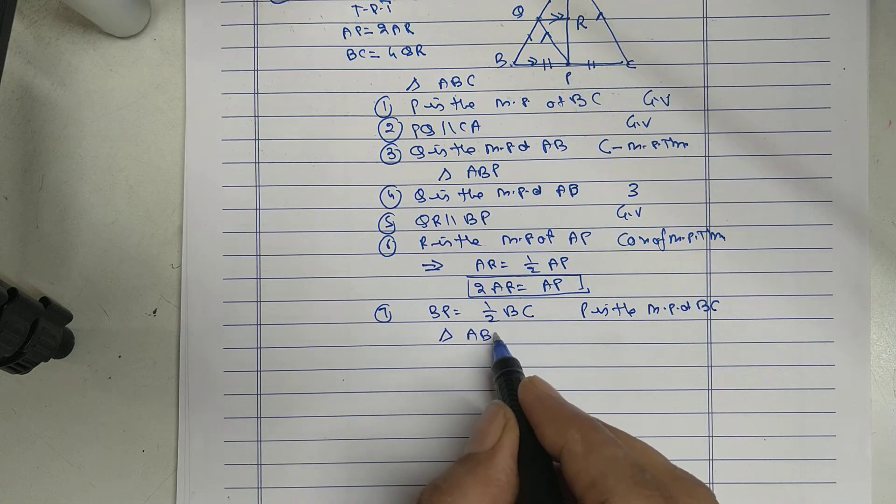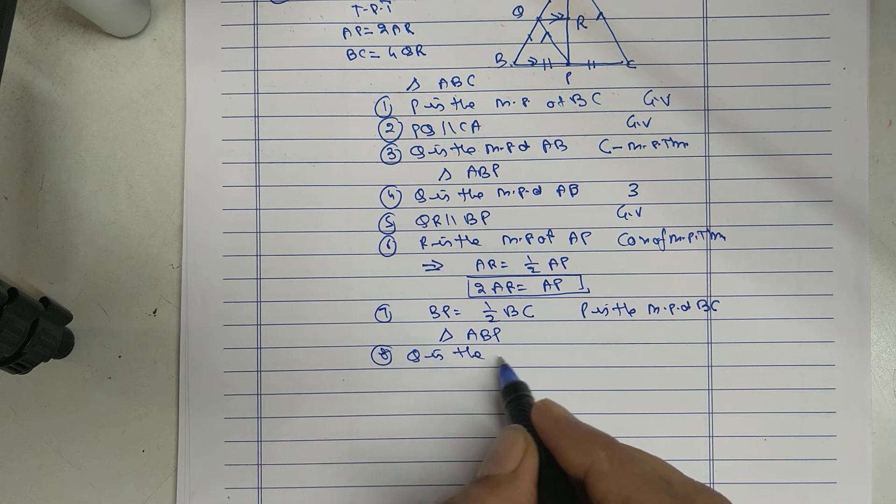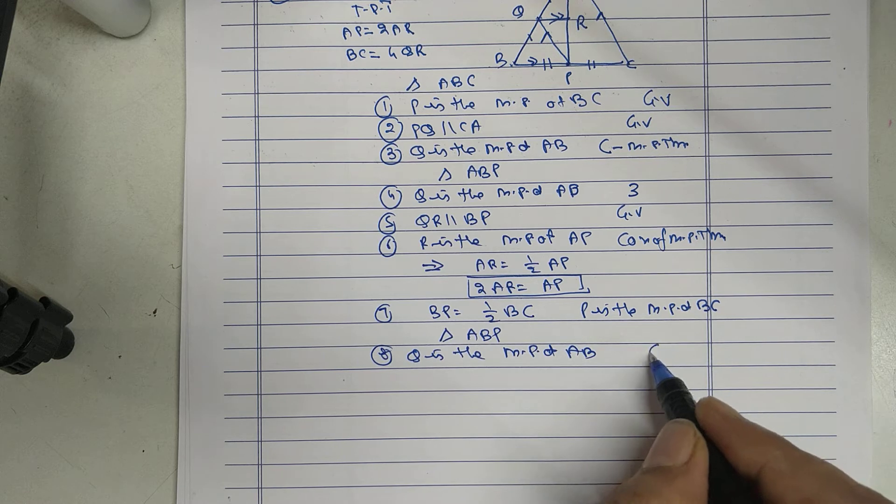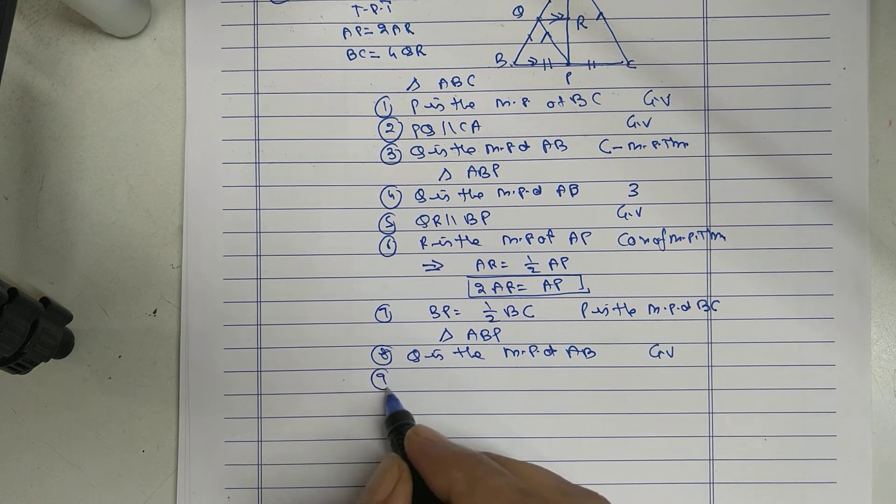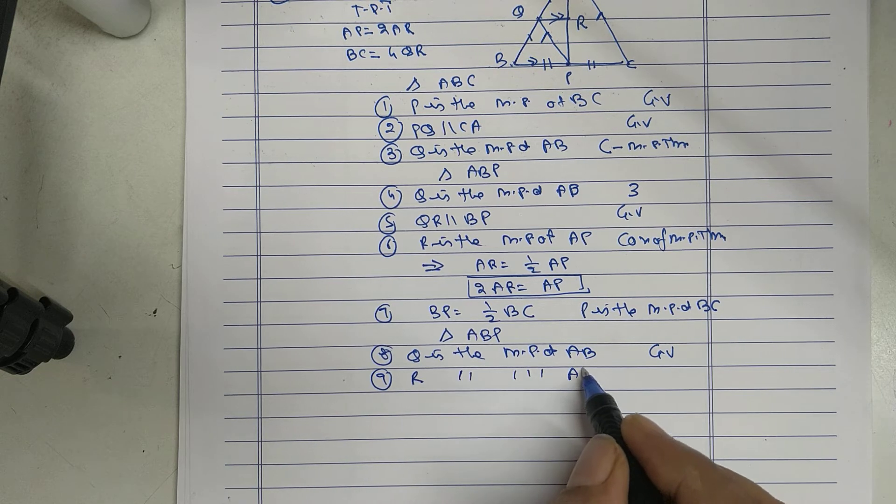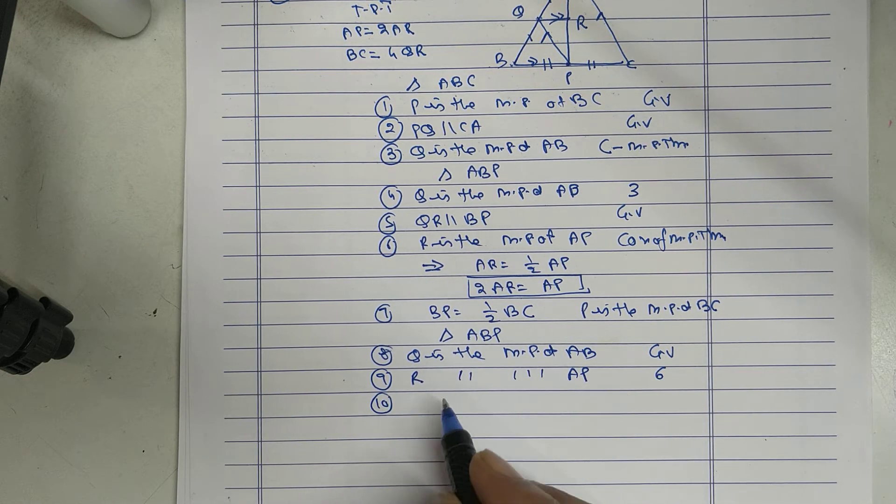Q is the midpoint of AB, given. R is the midpoint of AP. We proved in Statement 6. Therefore,